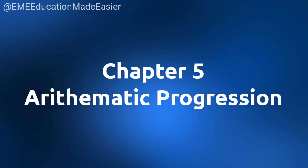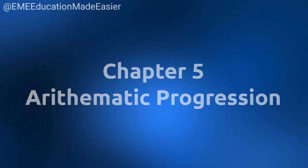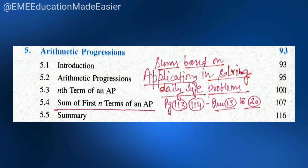In chapter number 5, Arithmetic Progressions — the sum of first N terms of AP and its application in solving daily life problems related to the sum of first N terms of AP is not coming. You can see through page number 113 and 114, from question number 15 to 20. These questions are not coming in Arithmetic Progressions, chapter number 5.